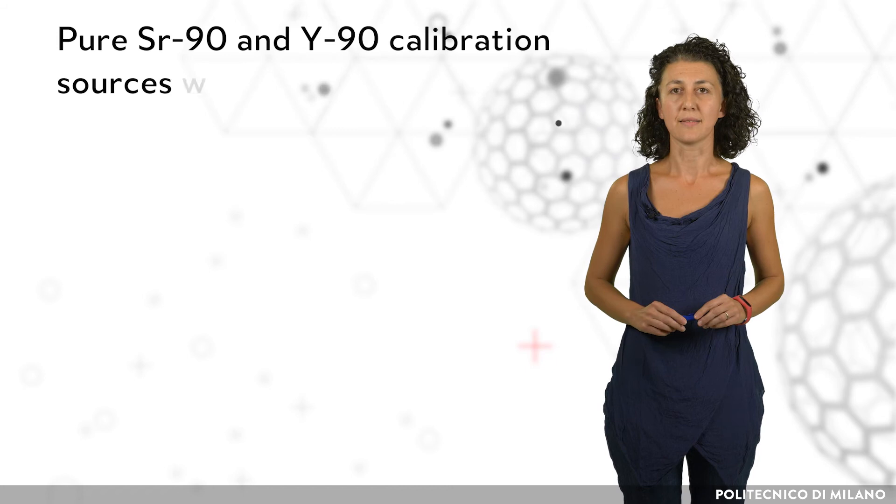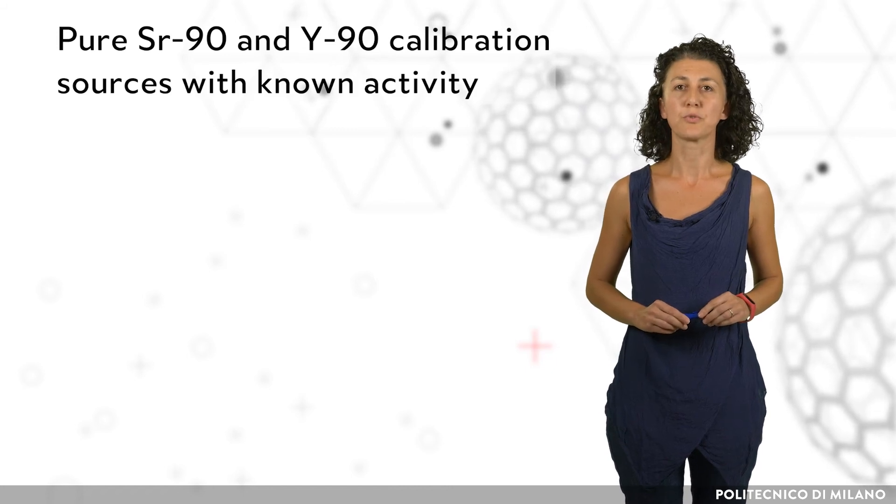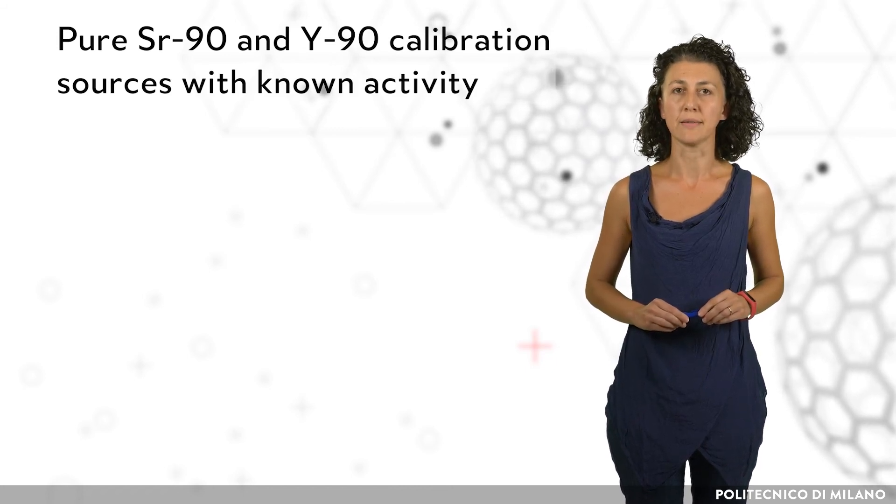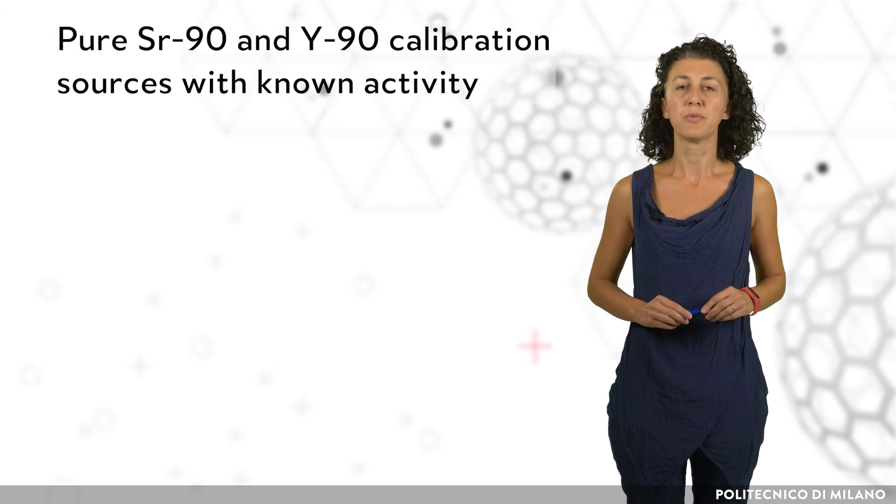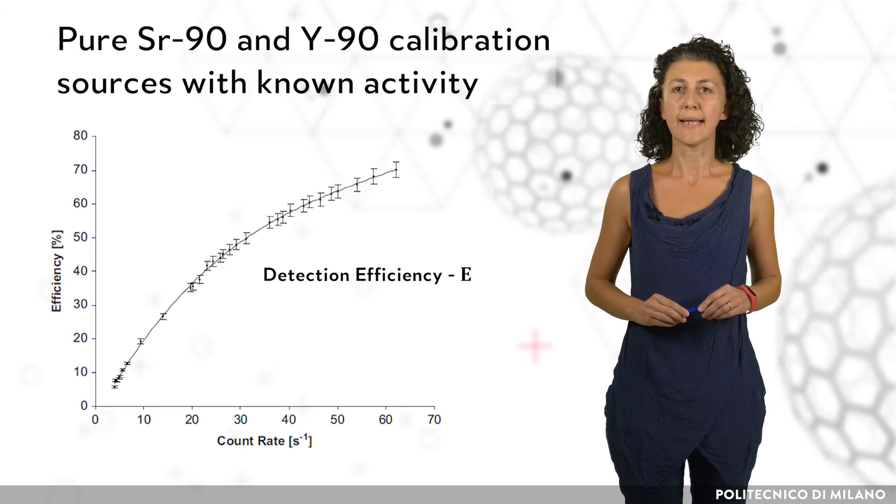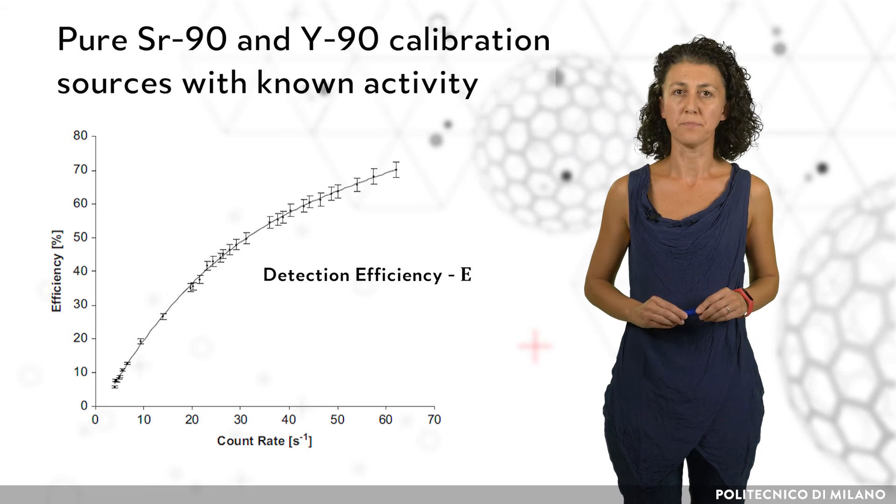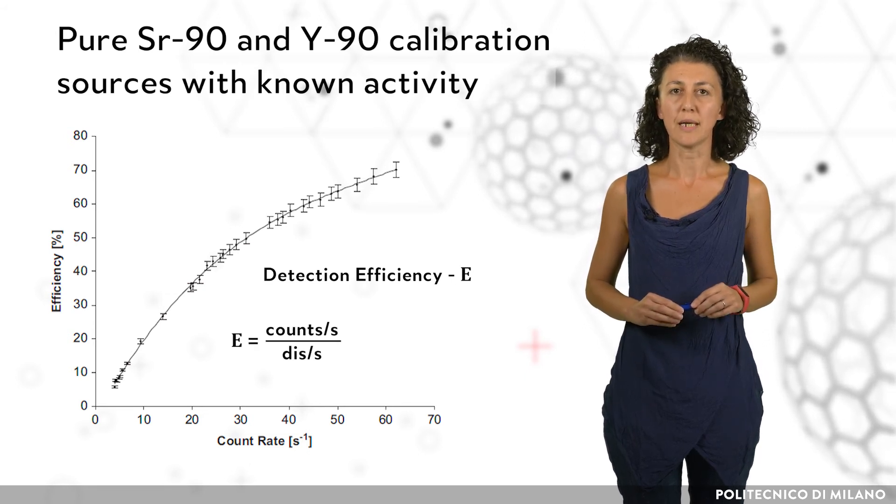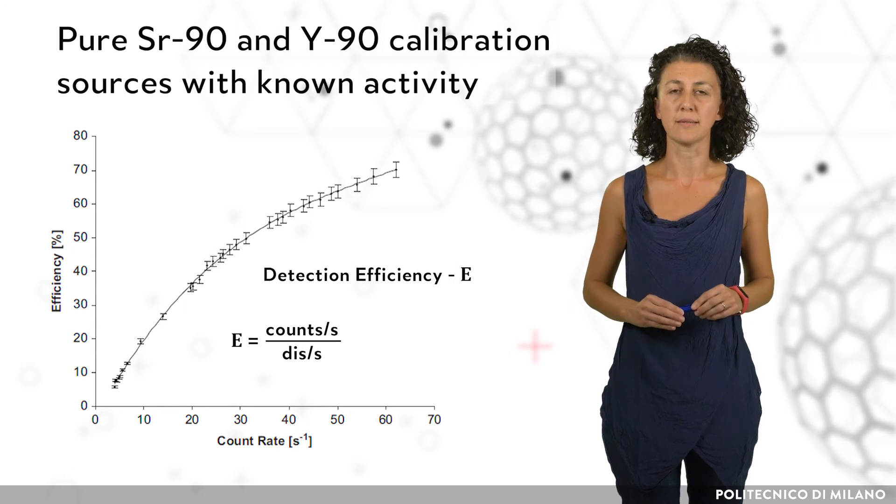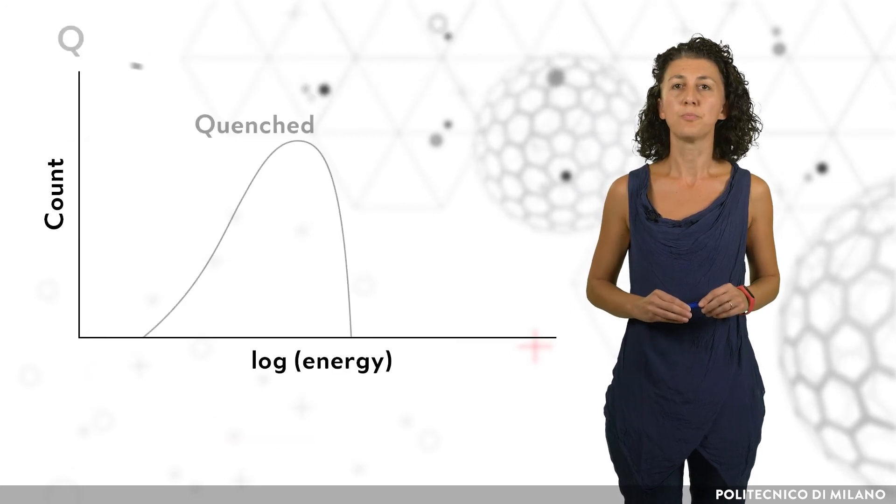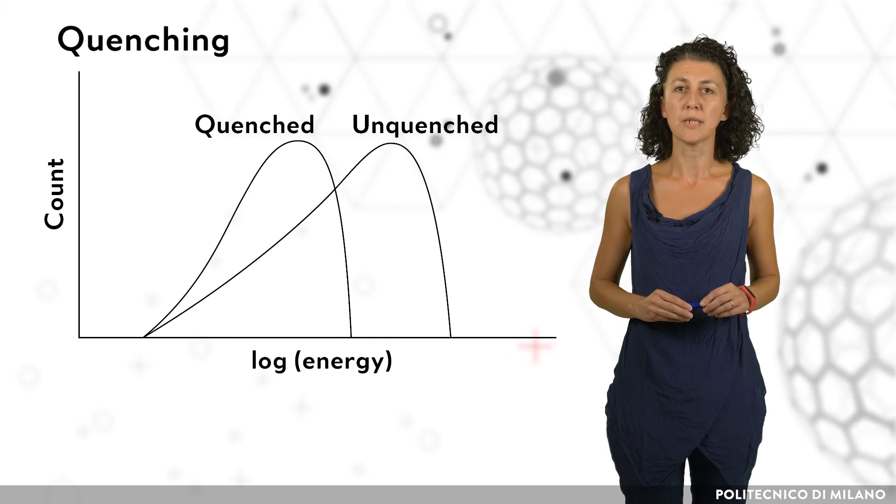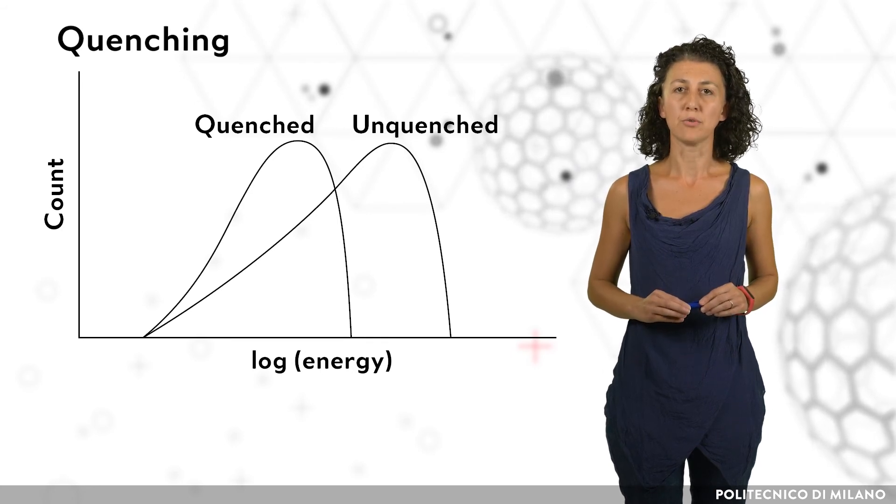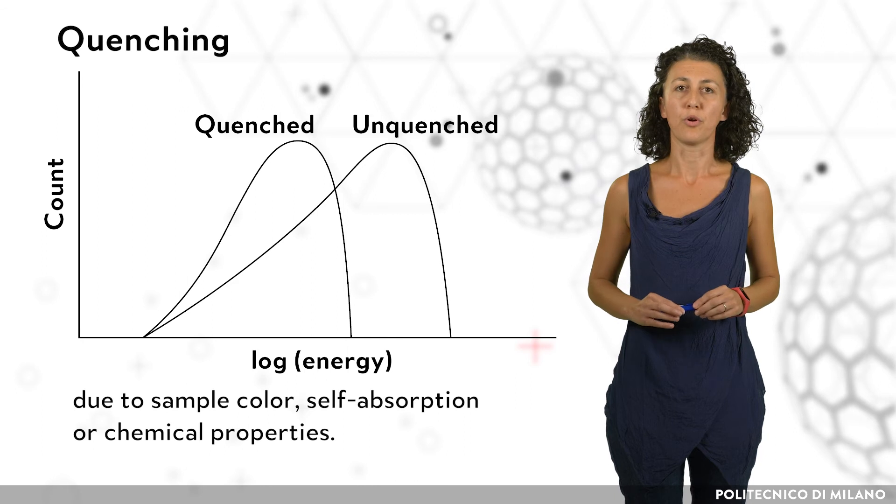It is necessary to prepare suitable pure strontium-90 and yttrium-90 calibration sources with known activity for determining the LSC detection efficiency. This parameter is defined as the ratio between the counts and decay events in the time unit. It could be influenced by quenching, a phenomenon that could give interfering counts due to sample color, self-absorption, or chemical properties.